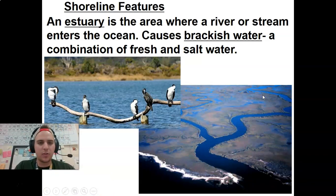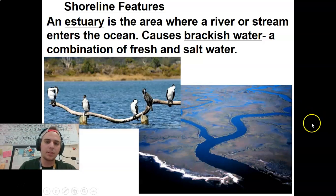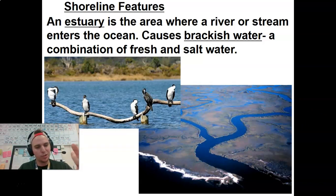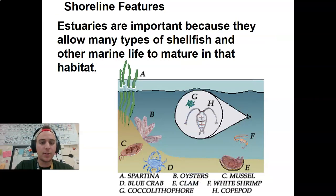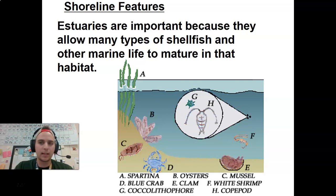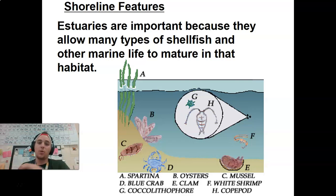An estuary is an area where a river or stream enters the ocean, and it causes brackish water — a combination of fresh and salt water. It's not super salty, but it's not fresh; it's a mix. Estuaries are really important. They allow many types of shellfish and other marine life to mature in that habitat before moving out to sea. It also allows for certain animals that live both in freshwater and in the ocean to exist — things like saltwater crocodiles going back and forth.